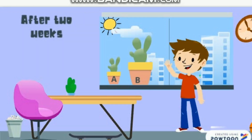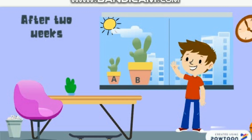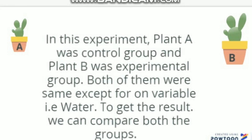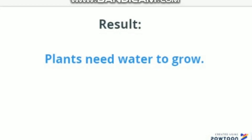After two weeks, Tim observed that plant B flourished well as he watered it regularly, but plant A was wilting as he was not watering it. In this experiment, plant A was the control group and plant B was the experimental group. Both of them were the same except for one variable, which is water. So to get the result, we can compare both groups. It is proved from this experiment that plants need water to grow.